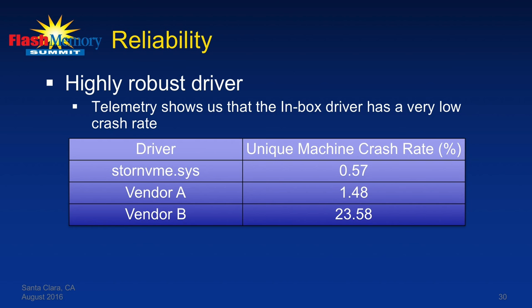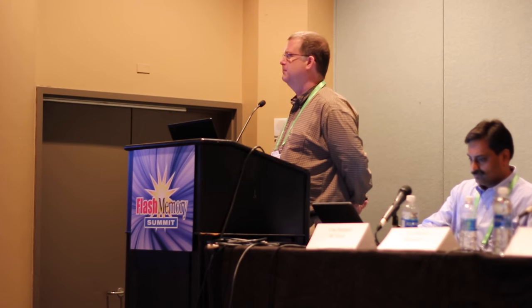Another key vector is reliability — reliability, reliability, reliability. Our inbox driver is a highly reliable driver. From our telemetry, we see that the unique machine crash rate is on the order of one-and-a-half percent. It's about three times better than vendor A and a lot better than vendor B. There are a variety of drivers out there with varying quality, and this needs to be taken into account when testing your systems.